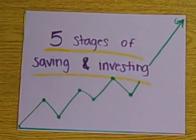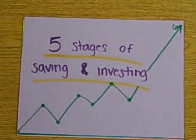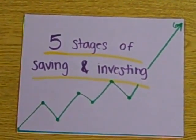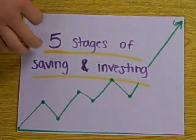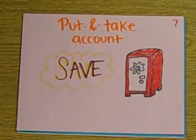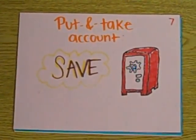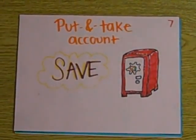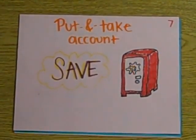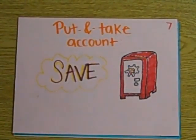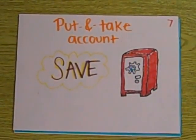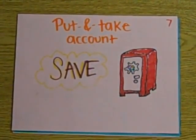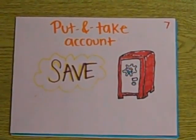There are also five stages to saving and investing. The first step is called a put and take account. It's when you make a checking account which you put money into for future investments and for emergencies.